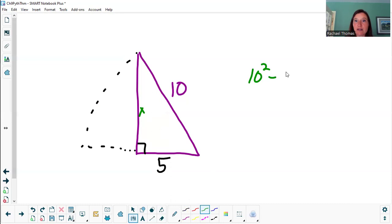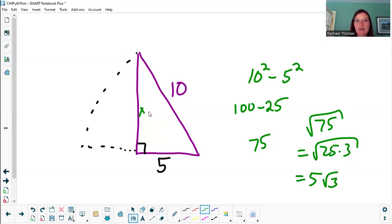10 squared take away 5 squared. That's 100 take away 25. That's 75. So x squared equals 75. The square root of 75 would be the square root of 25 times 3. The square root of 25 is 5. 5 root 3.